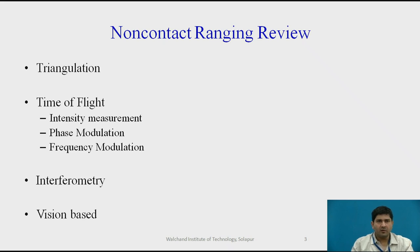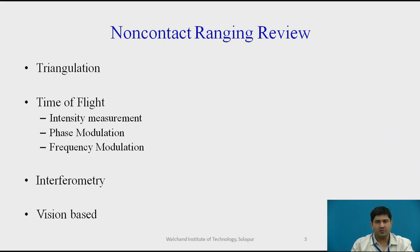Reviewing non-contact rain sensing — we had taken different types last time. One more technique that comes into the picture is triangulation, which is popular using existing rain sensors and also with camera-based rain sensing using a video system. By far, time of flight is the most preferred way of rain sensing and it typically includes intensity measurement, phase modulation or frequency modulation. Other techniques include interferometry and vision-based techniques such as binocular vision, structured light approach, and others.